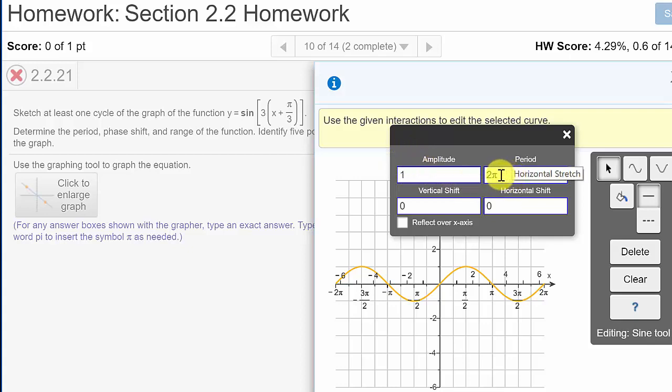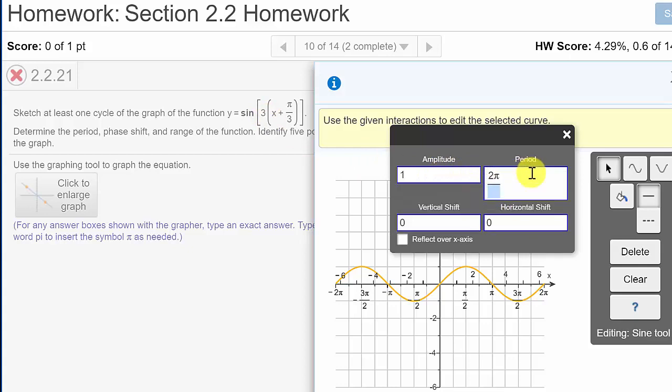All right. Now, the period, well, remember the period is 2 pi over B. Well, here's B, it's 3. So our period is 2 pi over B, which is 3. So our period would be 2 pi over 3. So we've got the 2 pi there, and then when we hit divide it, you hit the division symbol on your keyboard, the forward slash, and it automatically changes it to a fraction. And we would just put 3.